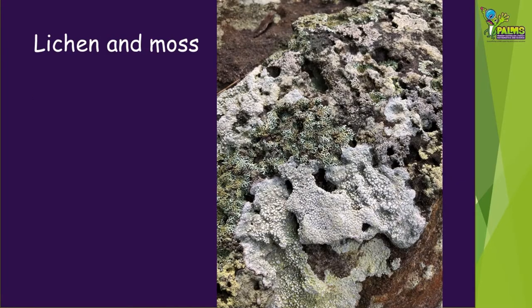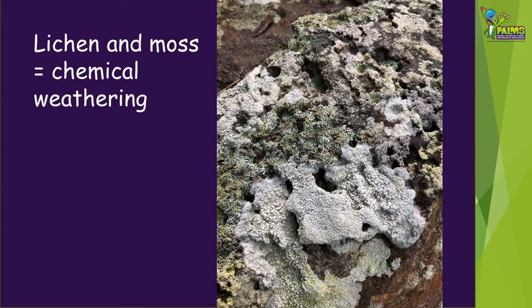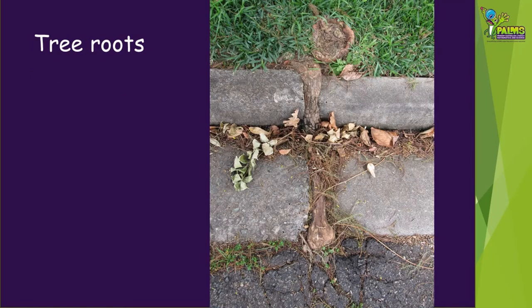Lichens and moss release weak acids that dissolve minerals in rocks, chemically weathering the rock over time. Tree roots have the same effect, but are bigger and stronger, so they can also use physical weathering to split apart rocks or concrete.